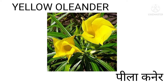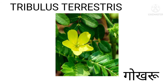Yellow Oleander — Yellow Oleander means Pila Kaner. Tribulus asteristis — Tribulus asteristis means Gokhru.